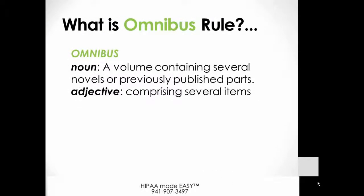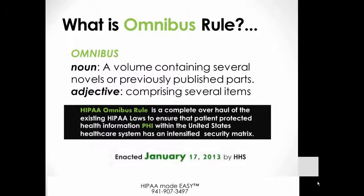Now, what is Omnibus Rule? Omnibus by definition is a volume containing several novels or previously published parts. That's exactly what HIPAA Omnibus Rule is — it's a complete overhaul of the existing HIPAA law to ensure that patient protected information, or PHI, within the United States health care system has an intensified security matrix.